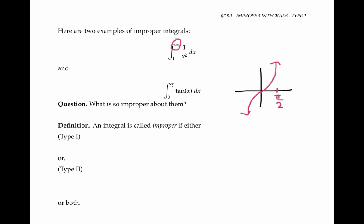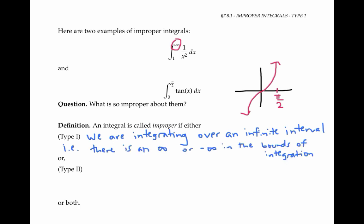An integral is called improper if either of these two situations occur. It's called a type one improper integral if we're integrating over an infinite interval — in other words, there's an infinity or a negative infinity somewhere in the bounds of integration. So the first example is a type one improper integral.